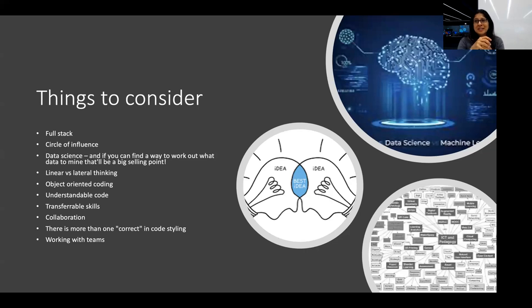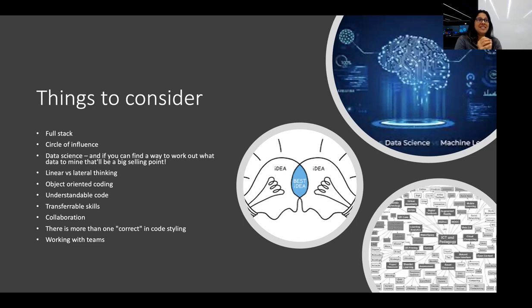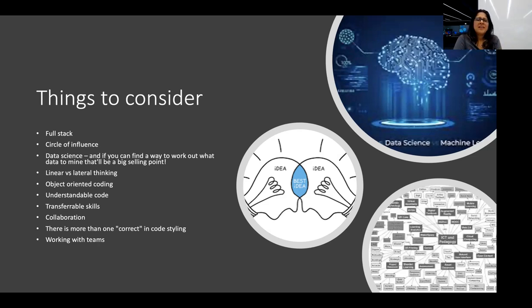Data science is a really big thing in software at the moment. Every company I've worked with has said 'we really need to find a way to use our data,' and not a single one of those companies has had any idea how to do that. If you can go to a company and work out how to use their data, the sky's the limit - people have so much data and they just don't know how to turn it into something useful.